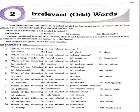Eighth question: which of the following is not related to a fort? Options are palaces, televisions, towers, halls. The right answer is televisions.